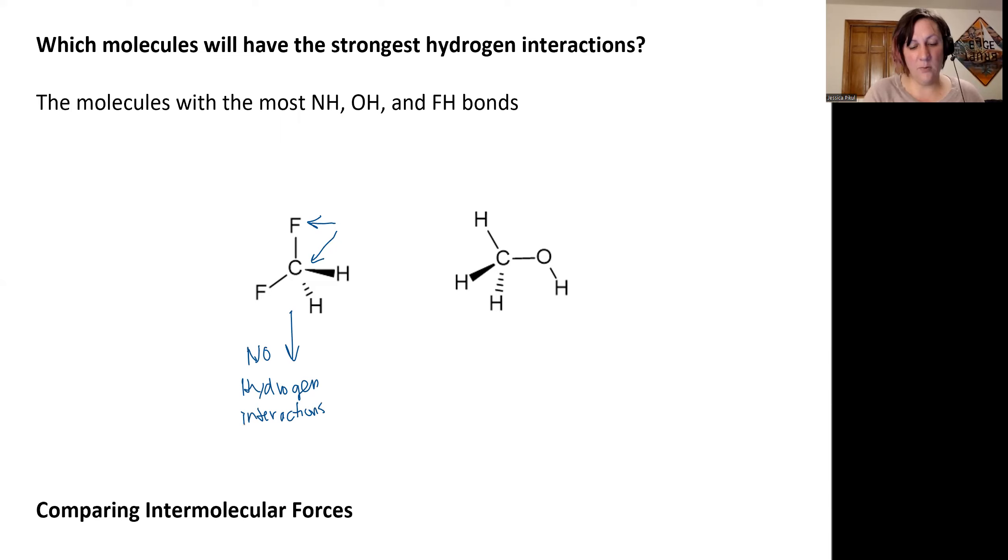In our second one over here on the right-hand side, we have methanol. It has an oxygen bonded to a hydrogen right here. And so this one is going to be able to interact with another molecule through hydrogen interactions.